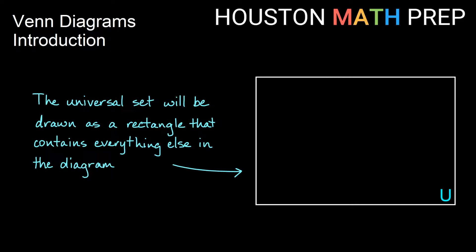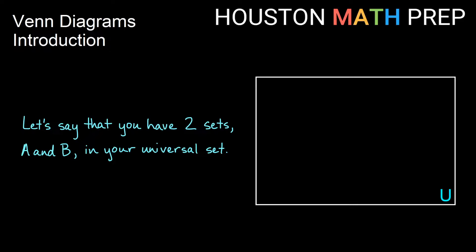We'll outline our Venn Diagram with a rectangle, so everything in the rectangle will be in our universal set. That will be all of the things that we're considering for our Venn Diagram. And let's just say that we have two sets, we'll call them A and B, in our universal set.